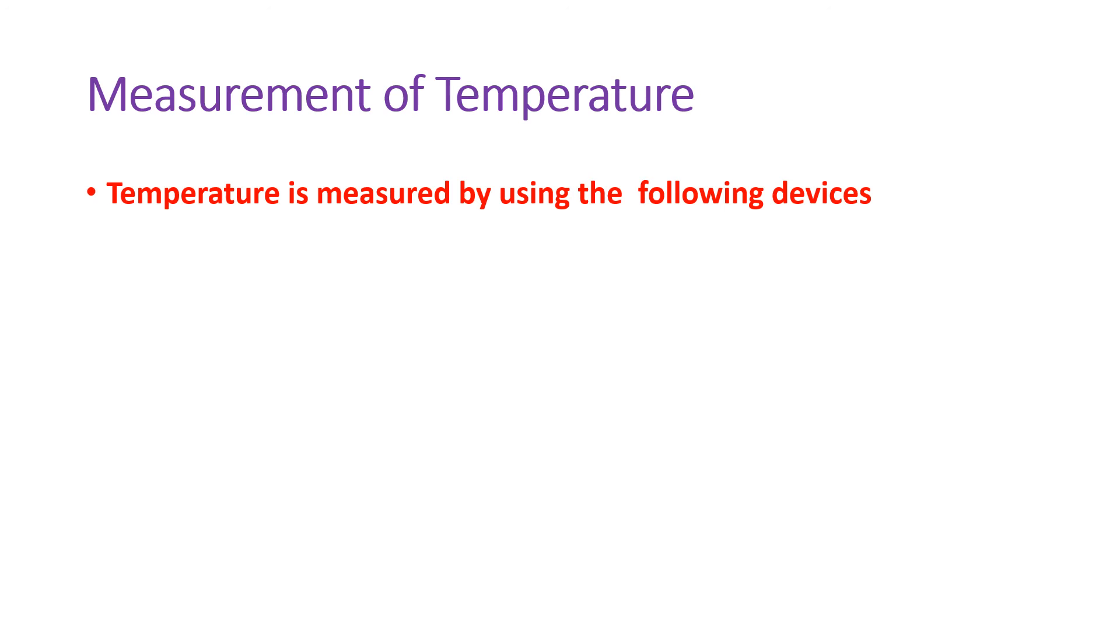Now how can we measure the temperature of a body? Temperature is measured by using a thermometer. Now we can see here there are two types of thermometer. One is a clinical thermometer which is used to measure the temperature of our body. And this is a laboratory thermometer. So this has a bigger range. It goes up to 100 degrees Celsius.